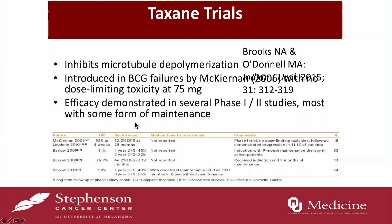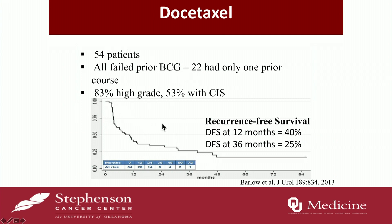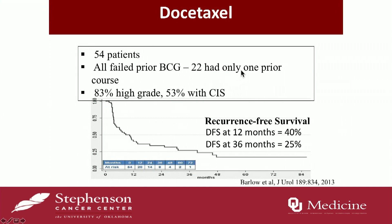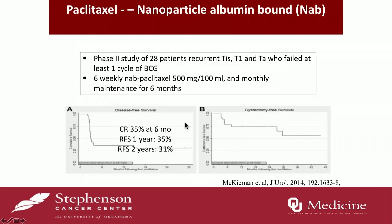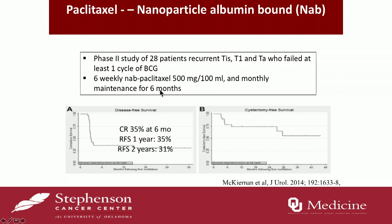Taxanes inhibit microtubule depolymerization, and there are several phase one and phase two trials in this space. A study by Barlow of 54 patients — mostly high-grade, mostly CIS — found disease-free survival at 12 months of about 40 percent; these patients had only failed one prior BCG. Nab-paclitaxel, bound to albumin nanoparticles, showed one-year recurrence-free survival around the 30 percent mark in phase two studies, dosed at 500 mg in 100 cc's monthly with six months of maintenance.